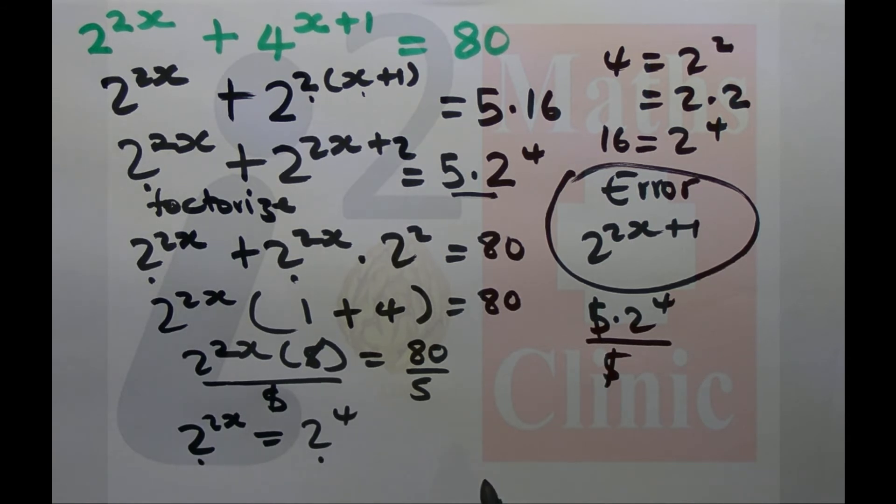Since the bases are the same, the exponents must be equal. Therefore 2x equals 4. Divide both sides by 2, x equals 2. That's the final solution.